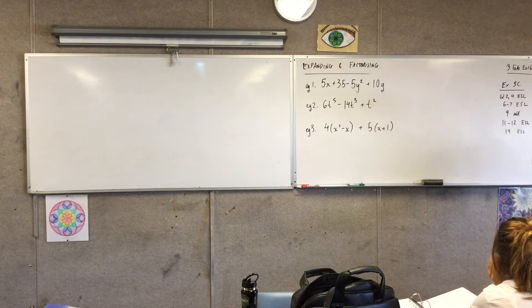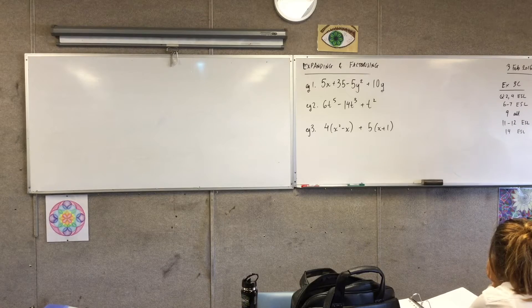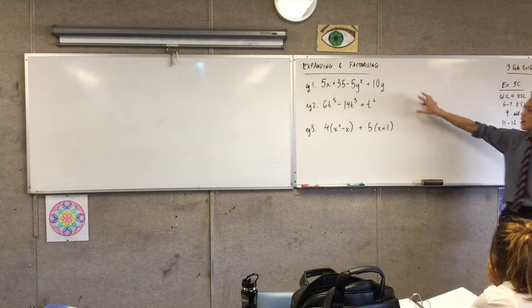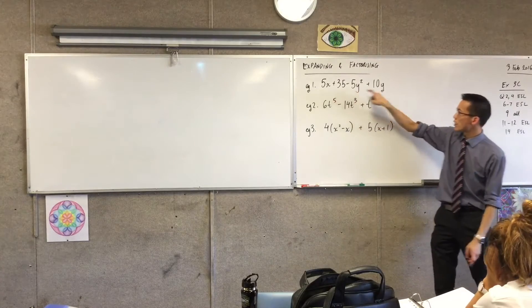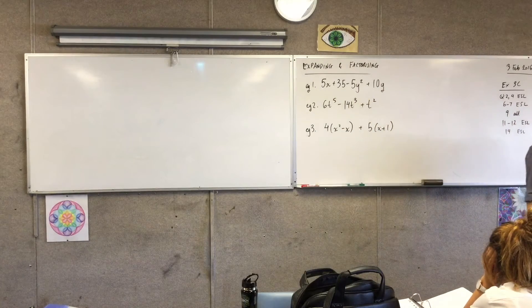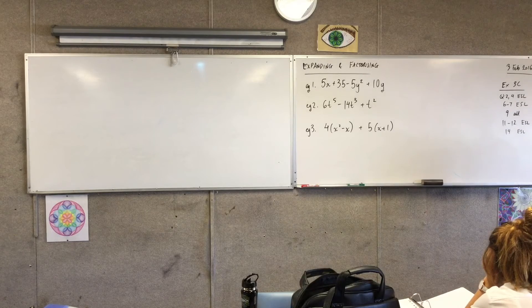Here are a couple of examples. We call these expressions. There's no equal signs, that's why it's not an equation. You ever notice that? Equation, equal signs. So I want to be able to write these in a simpler way. Now, I notice 1, 2, 3, 4 - four terms. Every single one is a multiple of 5. Do you notice that?